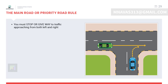The main road or priority road rule: a main road could be either two-way or one-way. Priority must be given to vehicles on the main road from both sides. If the main road is one-way, traffic generally flows from the left side, though rarely some vehicles may reverse from the right. If the main road is two-way, traffic approaches from both sides.